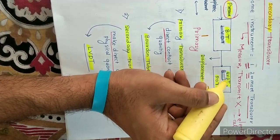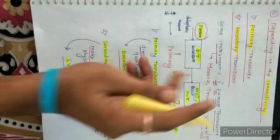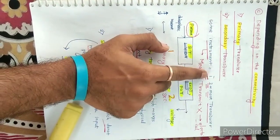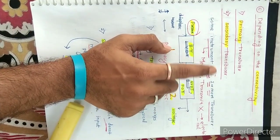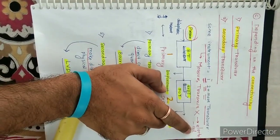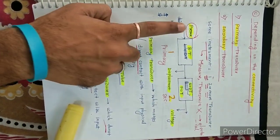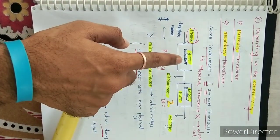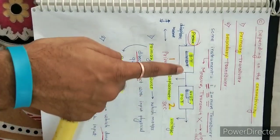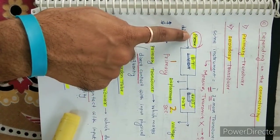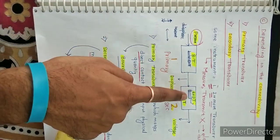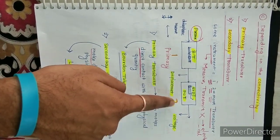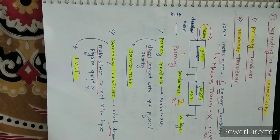LVDT stands for Linear Variable Differential Transducer. So in this classification depending on connectivity, the pressure is converted into displacement and displacement is converted into voltage. The transducer that contacts the input directly is the primary transducer, and the one that does not is the secondary transducer.